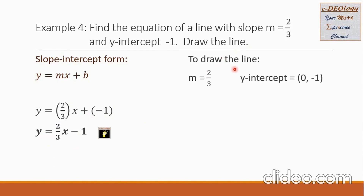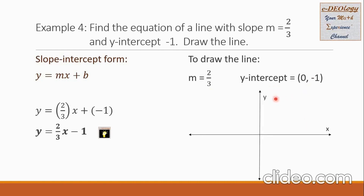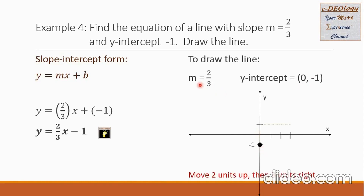Now, to draw the line, first let us collect the given. The slope m is 2 over 3. The y-intercept given is negative 1, which we can translate into the ordered pair (0, negative 1). We should remember that this y-intercept is a point of the line. Let us draw our x and y axis, then locate and plot the point (0, negative 1) — and the point is right here.